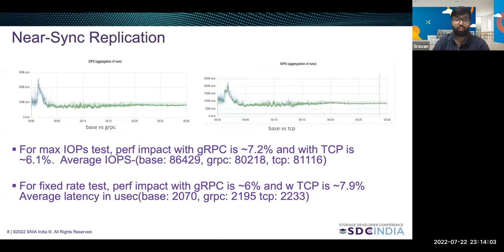Finally, coming to near-sync replication, we see that for the max rate IOPS test, the use of TCP interfaces does slightly better when compared to gRPC. However, in the fixed rate test, the use of TCP interfaces did slightly worse when compared to gRPC interfaces. Through these performance numbers, one thing we can see is that in most cases, the use of secure TCP interfaces does definitively better when compared to gRPC interfaces.